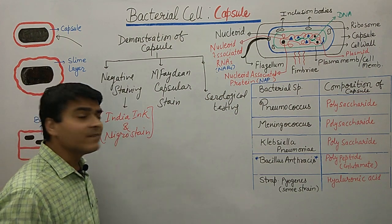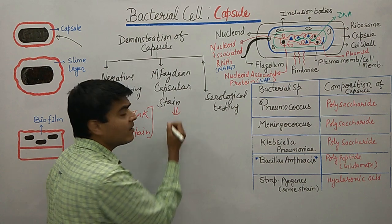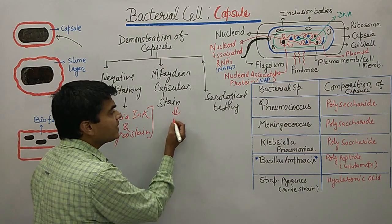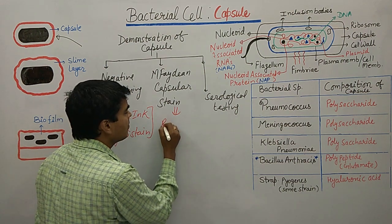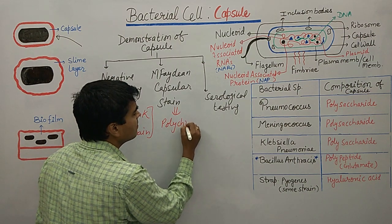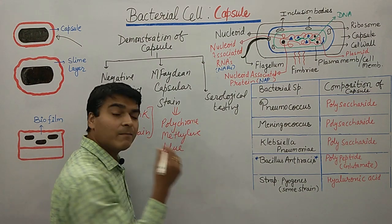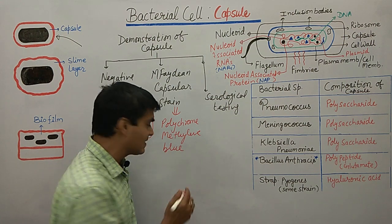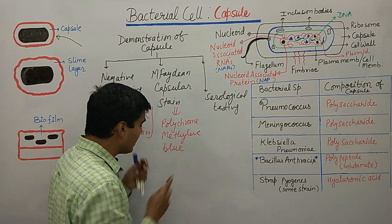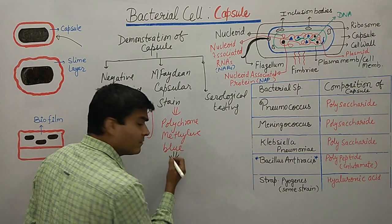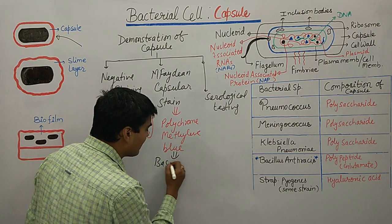In the amphibian capsular staining method, we use polychrome methylene blue stain. This method is used for the bacterium Bacillus anthracis.